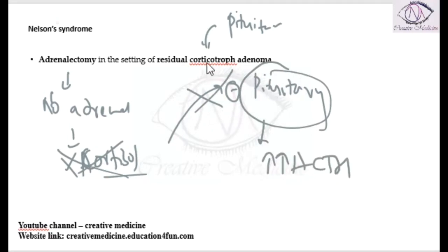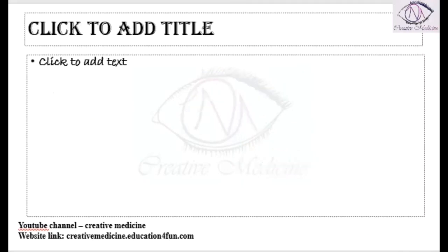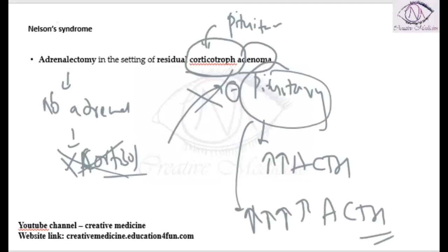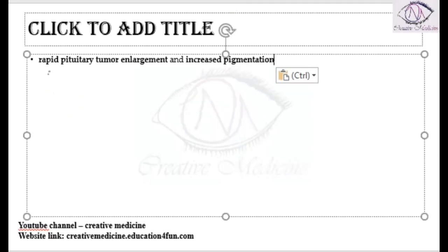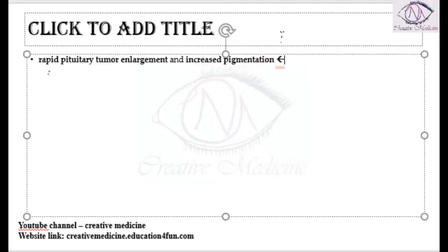So the pituitary will increase production of ACTH. Because there is already a corticotrope adenoma in the pituitary, there will be a much greater increase in adrenocorticotropic hormone production. Whenever there is increased ACTH, the tumor — the corticotrope adenoma — starts to increase in size. High ACTH levels also stimulate melanocyte stimulating hormone production.